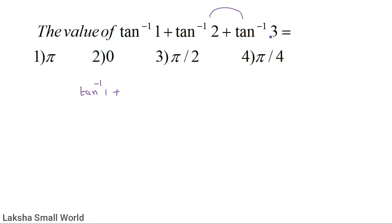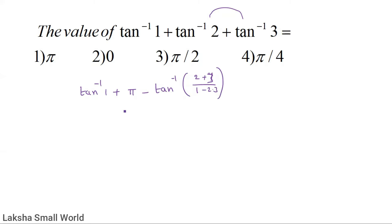Since x > 0, y > 0, and x·y > 1, we must use the formula: π minus tan⁻¹((x+y)/(1−xy)). So we get tan⁻¹(1) + π minus tan⁻¹((2+3)/(1 − 2×3)), which is π minus tan⁻¹(5/(−5)).